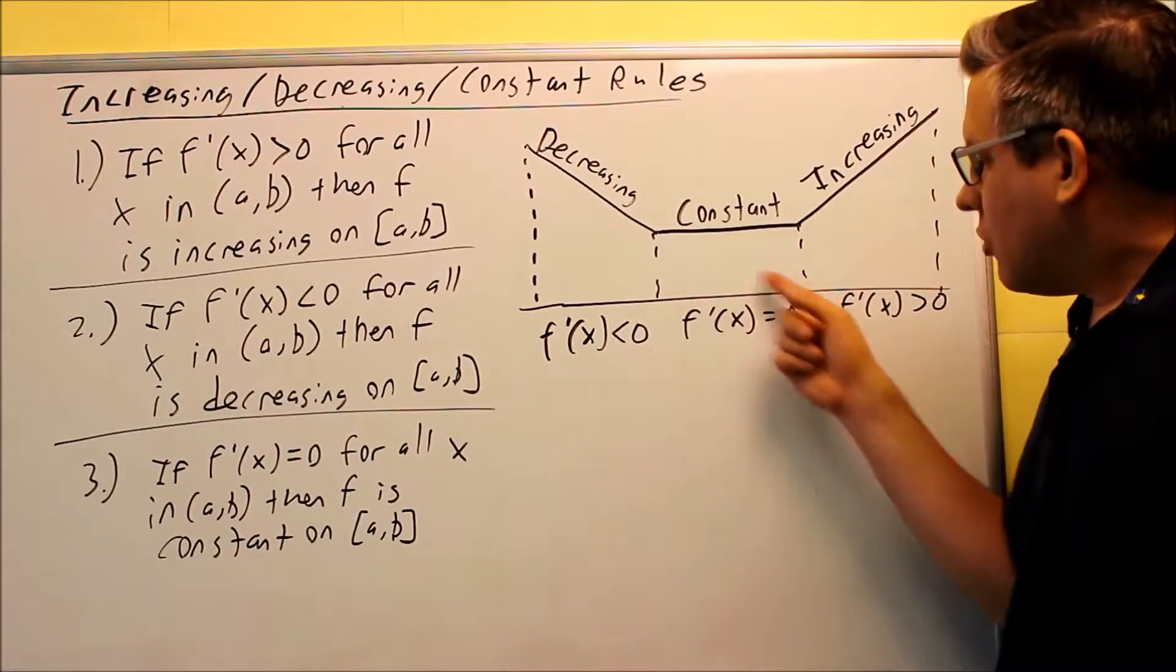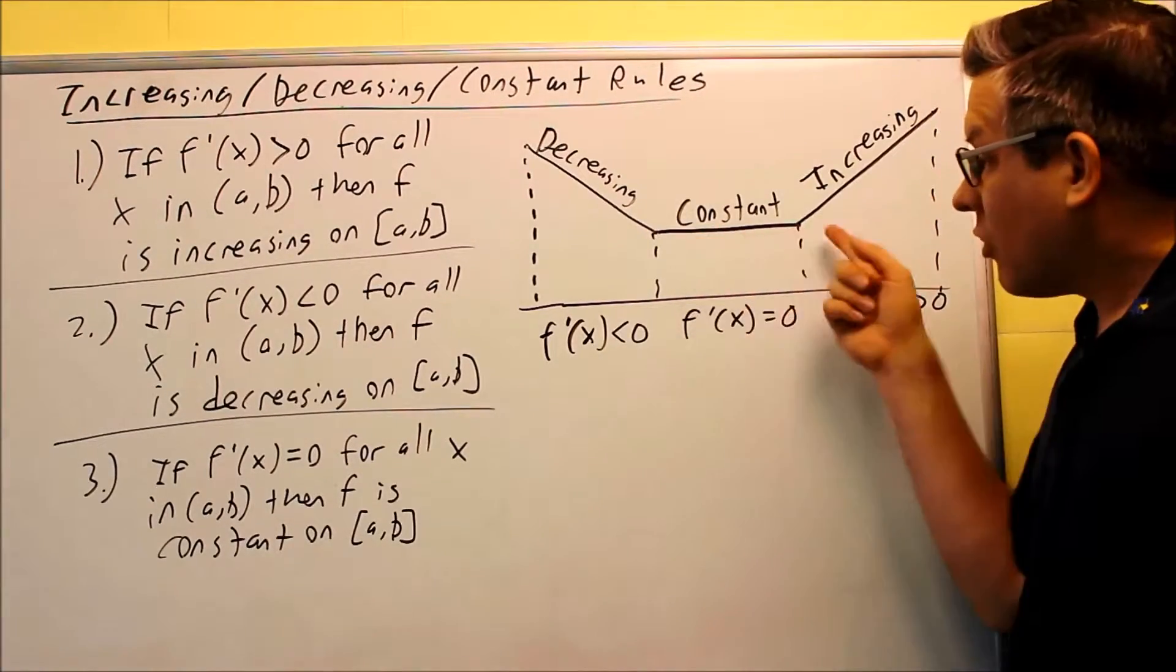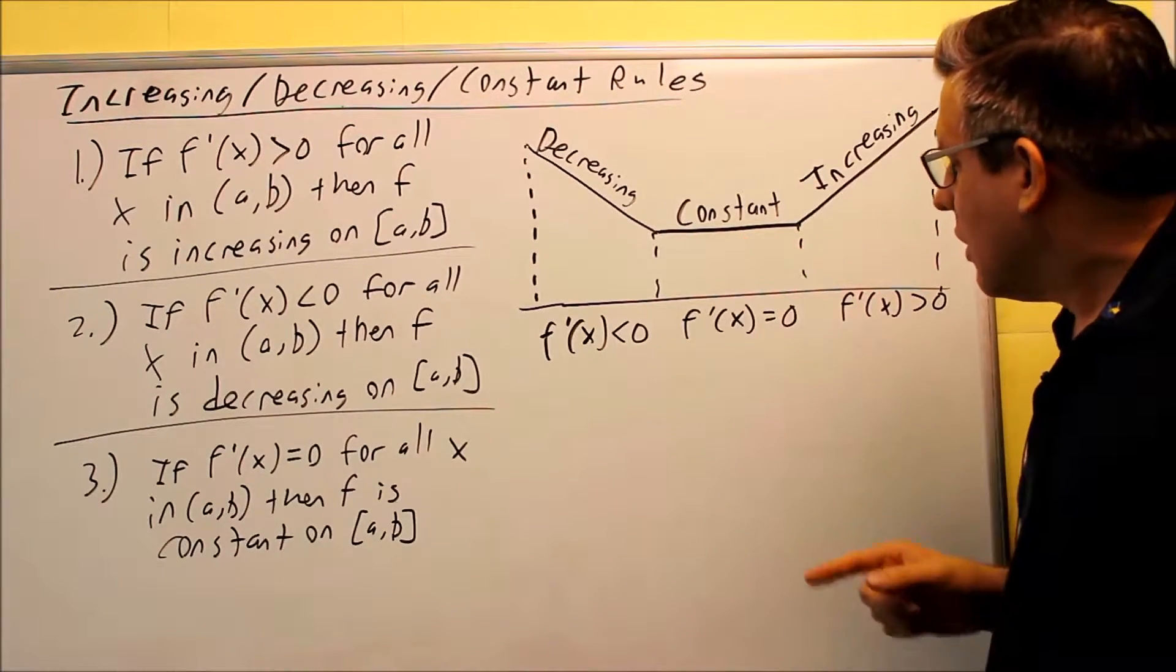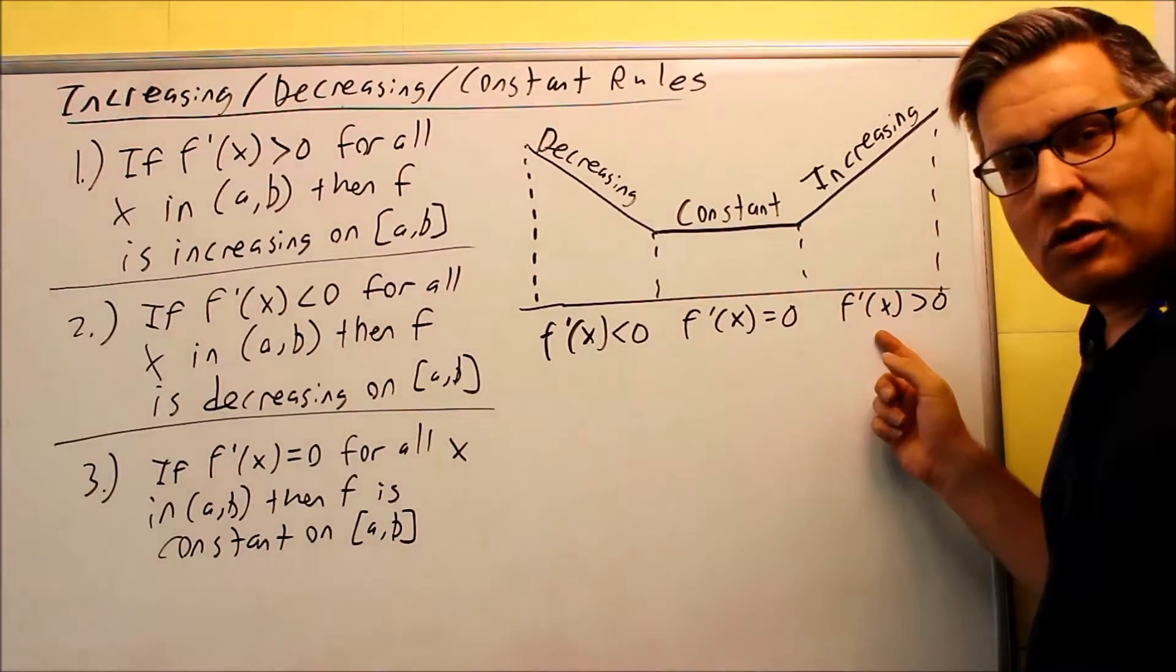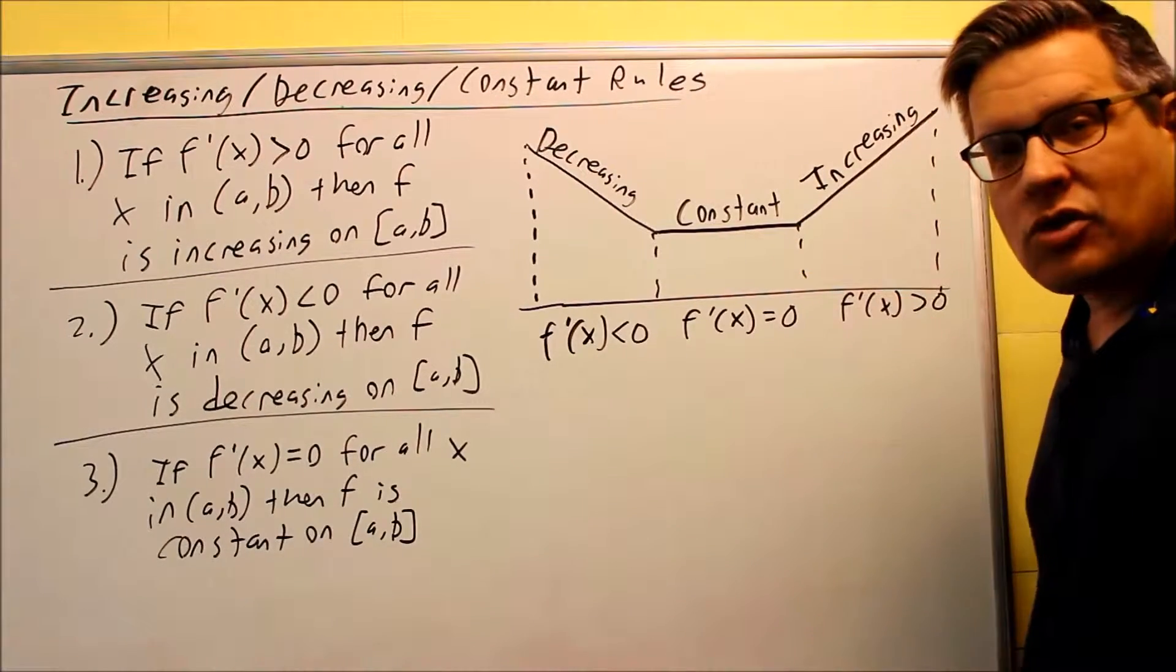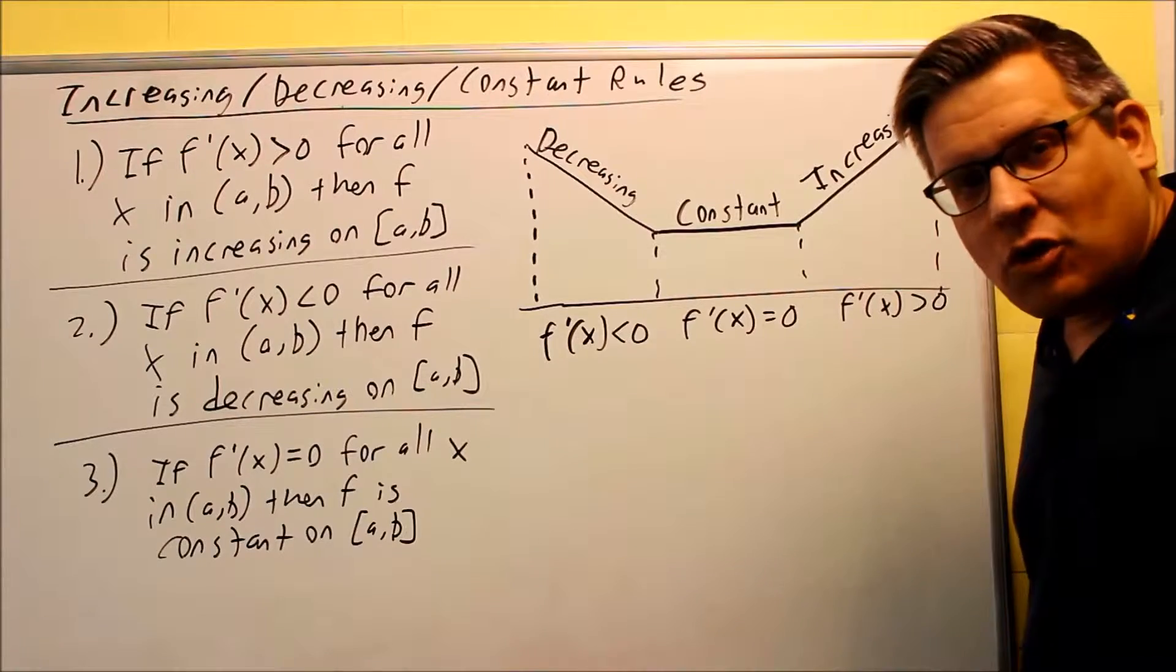Likewise, if the derivative is equal to zero, that means we have a line that must be horizontal because it's not increasing, not decreasing - it's constant. And then if you have a derivative that's greater than zero, that means the slope is positive and so it will be moving uphill as you go from left to right.